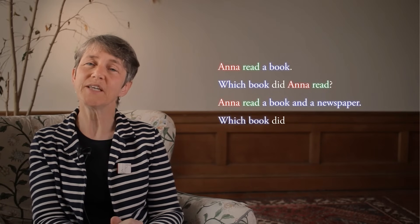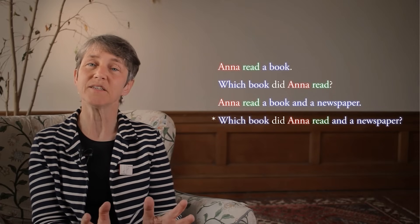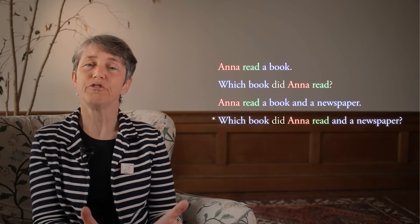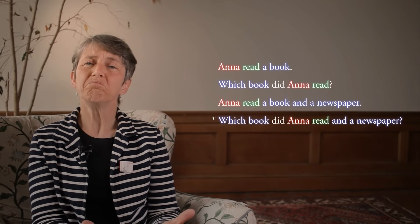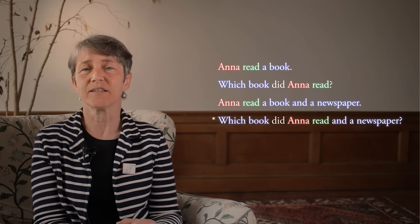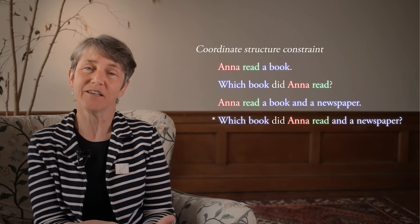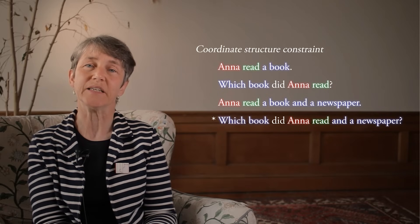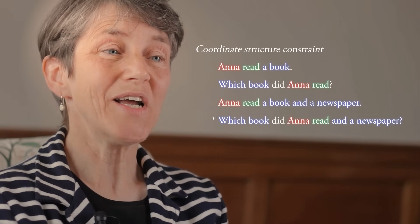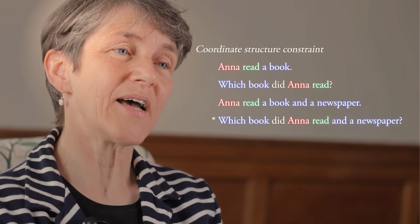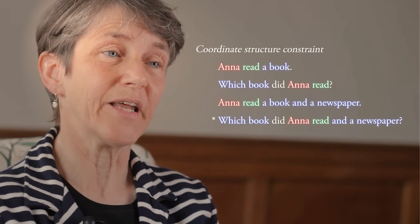But if you try it, you'll get 'which book did Anna read and a newspaper?' — and that sentence is ungrammatical. Speakers of English will tell you it's not a possible sentence of English. That's one case of an ungrammatical sentence, something which is syntactically unacceptable, but which no speaker of English is ever taught explicitly is unacceptable. This reflects a rule that speakers have in their syntactic knowledge of English, but one which was never taught to them explicitly — the result of a descriptive rule.